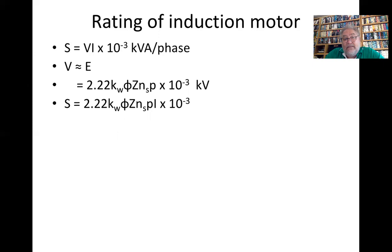And we get S = 2.22 k_W φ Z n_s p × I × 10^-3 kVA. If we divide by n_s, we get the kVA per rev, which is 2pφ × IZ × k_f k_p and k_d.